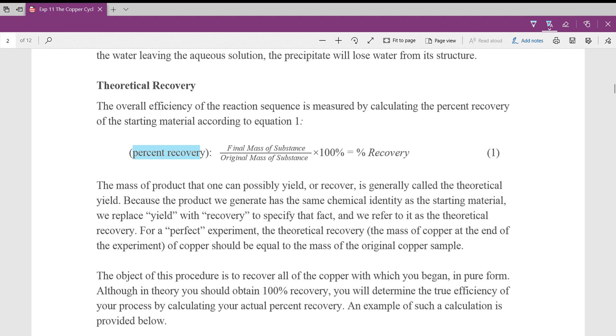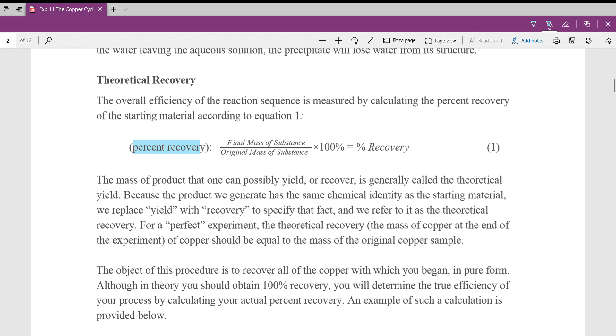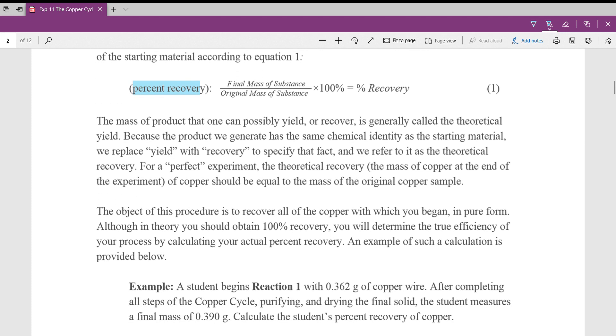Basically, percent recovery is just what you end up with over what you started with. So at the end of the lab, you're going to have some mass of copper. You divide that by the mass of copper that you started with, multiply it by 100. That's your percent recovery. If you start with a gram and you end with a gram, your percent recovery is 100. If you start with a gram and you end up with half a gram, your percent recovery is 50%. That means you lost half of it somewhere along the line. And it is entirely possible to get a percent recovery, especially in this lab, over 100%. There's lots of things that can go wrong.